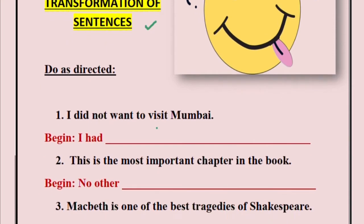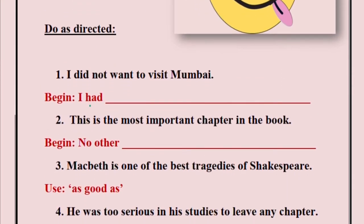Sentence one: I did not want to visit Mumbai. How will you frame the sentence if you have to begin with 'I had'? We can write: I had no intention to visit Mumbai. We have to use the word 'intention' to show that this part of the sentence is inside it. You may also write 'I had no desire to visit Mumbai', but it is best to write 'intention'.